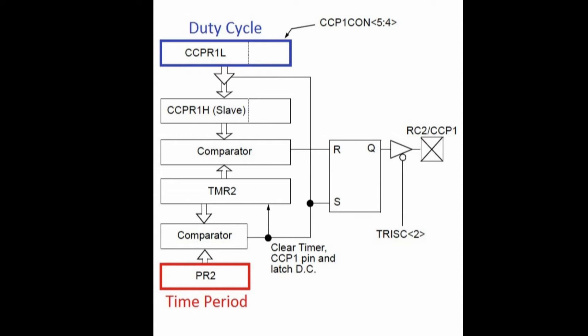This is the block diagram of CCP module working as PWM generator. Time period of the generated waves are determined by the value in the PR2 register and duty cycle is determined by the value in the CCPR1L register and fifth fourth bits of CCP1CON register.